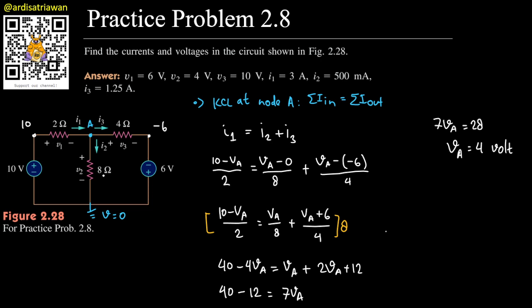But we are not asked about Va, we are asked about V1, V2, and V3. We can calculate that. For V1, V1 is the difference between this node and this node, so that will be 10 - Va, which is 10 - 4. So V1 equals 6.